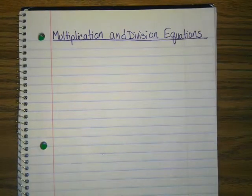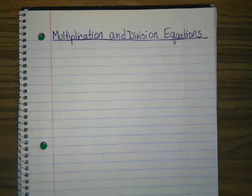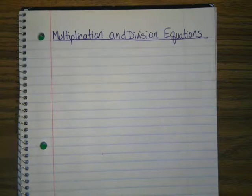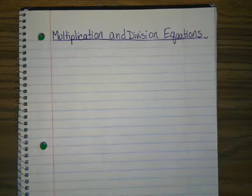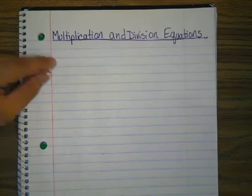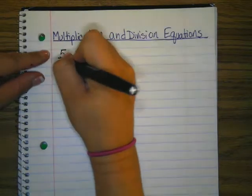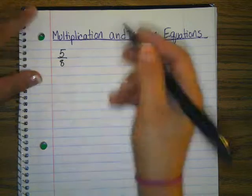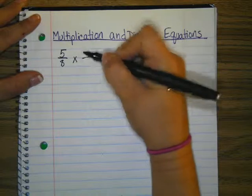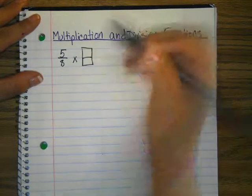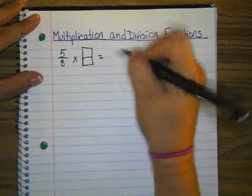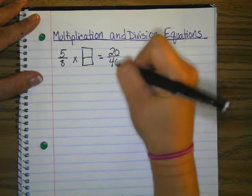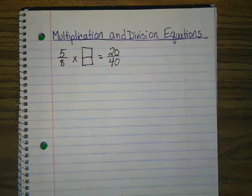So we're going to start with multiplication, and these are some problems you might have seen on your homework last night — a little helpful for those of you with late homework. So if we're starting with 5H times some number — this is our missing factor — equals 20/40. Basically, what we're doing is using the inverse operation. Inverse means opposite. So everybody, what's the opposite of multiplication?